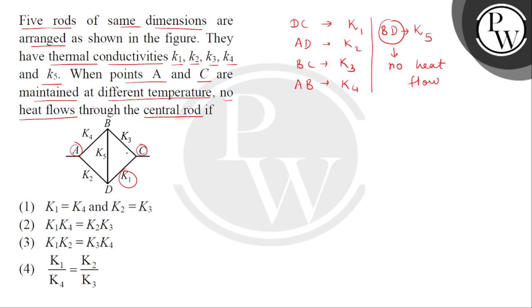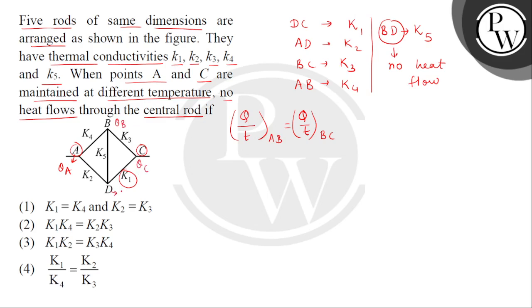यहाँ पर हम देख सकते हैं कि जब B and D के बीच में कोई भी heat flow नहीं होता, इसका meaning क्या हुआ? The rate of heat flow in the rod AB is same as the rate of heat flow in the rod BC. बच्चों इसको हम लोग लिख सकते हैं — यहाँ temperatures mention कर देते हैं: let this is theta A, B पर temperature है theta B, C पर temperature है theta C, and D पर temperature मान लेते हैं theta D.